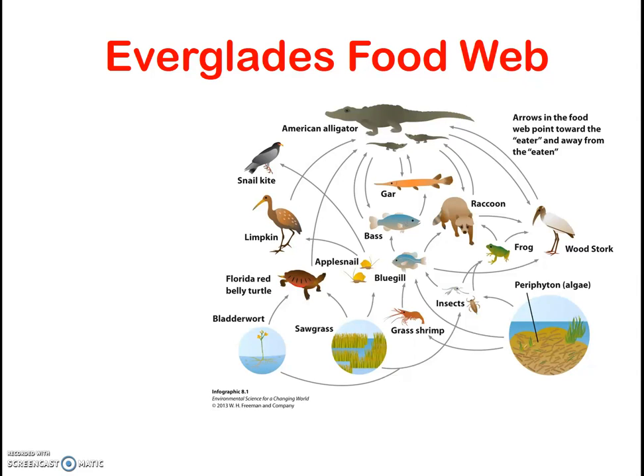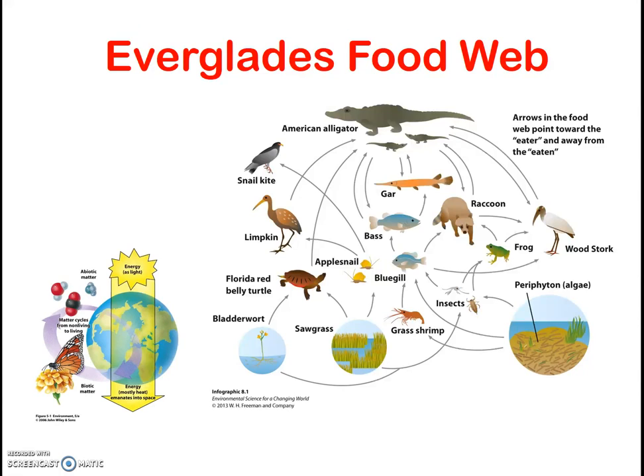In the previous video clip, we mentioned the Everglades food web. Food chains and food webs are simply models that show how energy flows through an ecosystem. Notably, this is different than how matter, such as water, carbon, and nitrogen cycles within an ecosystem.